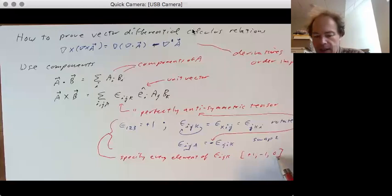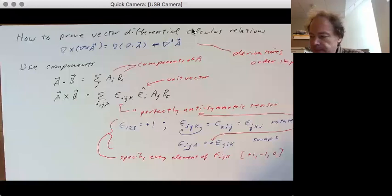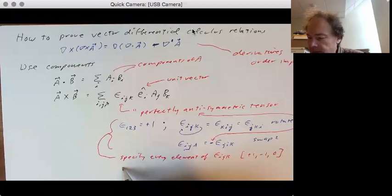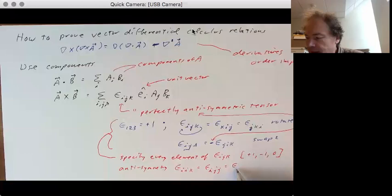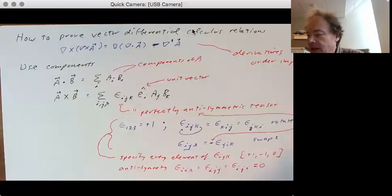And, of course, because of the anti-symmetry, epsilon i, j, k equals epsilon i, j, j is equal to epsilon i, j, i, it's equal to zero. Because it's equal to its negative.